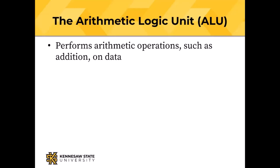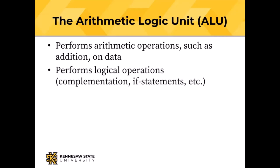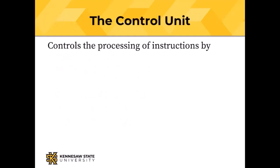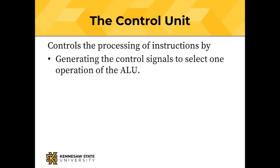Arithmetic operations like addition, or logical operations like complementation or comparison. The arithmetic and logic unit can also be used to transfer data both within the CPU and from the CPU to the input and output subsystem. The control unit controls the processing of instructions by generating control signals that select one operation of the ALU — we're going to see some detail about that on Tuesday.